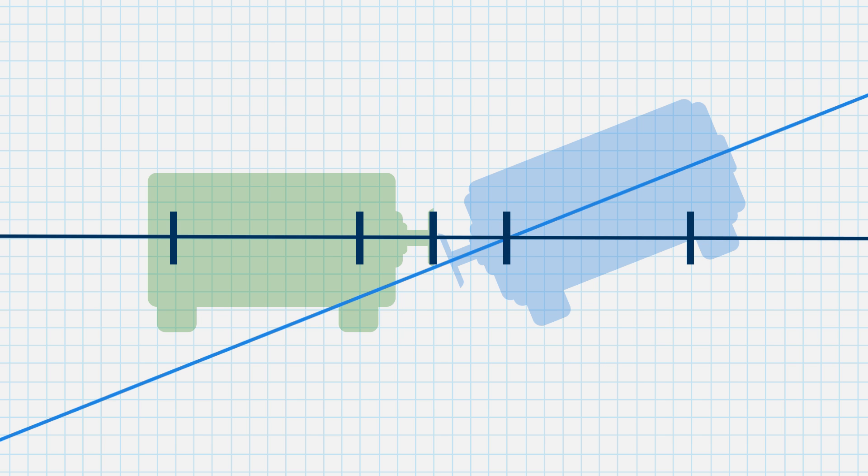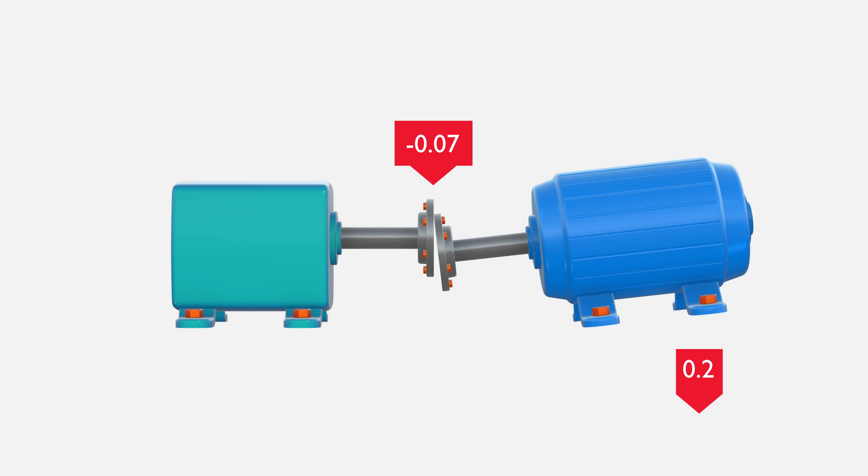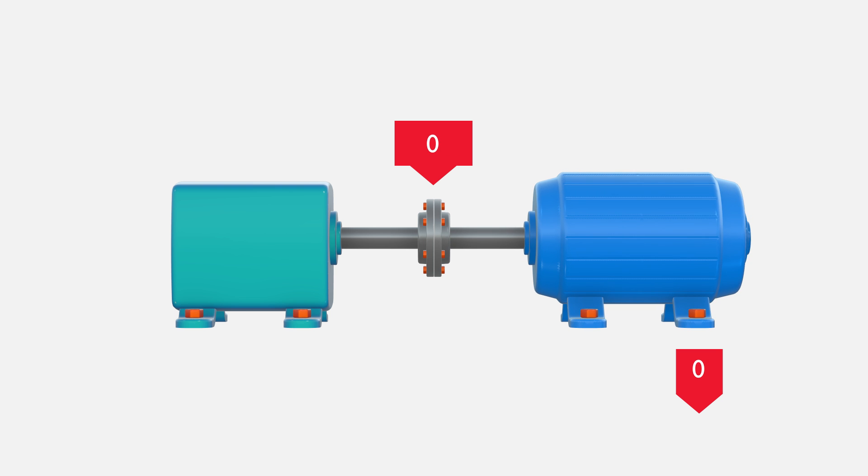In this example, the moveable shaft is sitting low at the coupling but high at the rear feet, since we induced the angular misalignment by adding 0.4 mm to the rear feet. The only way to correct the misalignment is by removing 0.4 mm to lower the rear feet.